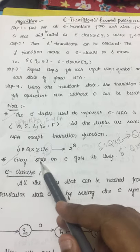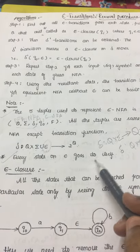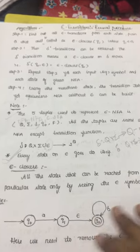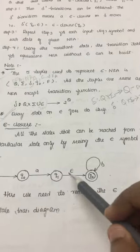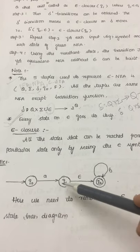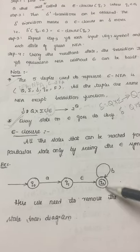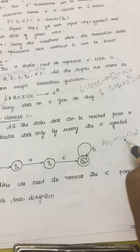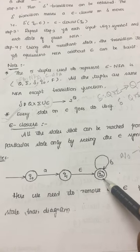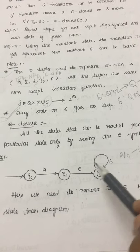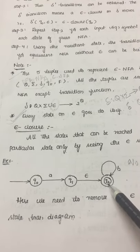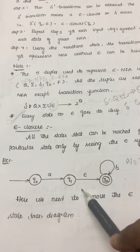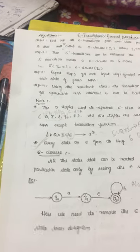The other important point is: every state on epsilon goes to itself. Now let us solve an example. This example has 3 states: q0 is the initial state, q2 is the final state represented by double circles, and there is an epsilon move from q1 to q2. We have to remove the epsilon move from this diagram.